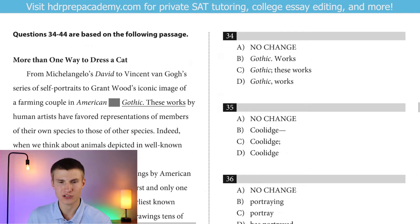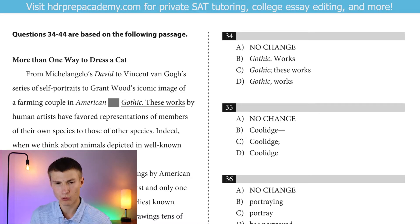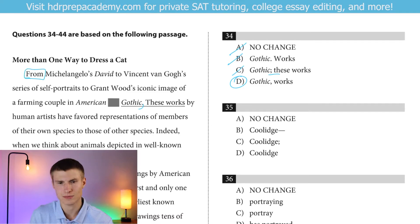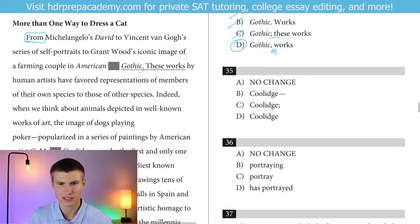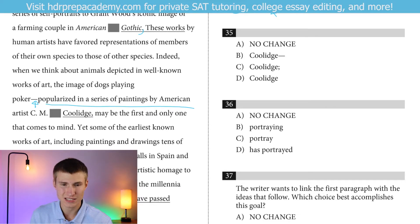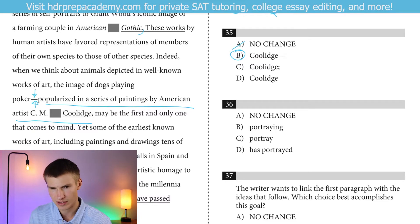Moving on to passage four: 'More than one way to dress a cat.' From Michelangelo's David to Vincent van Gogh's series of self-portraits to Grant Wood's iconic image of a farming couple in American Gothic — that's not an independent clause, so we can't have a period or semicolon there. We get rid of A and B (period), get rid of the semicolon — it's a dependent clause at the beginning of a sentence, so we put a comma there. Works by human artists have favored representations of members of their own species. When we think about animals depicted in well-known works of art, the images of dogs playing poker — this M-dash is indicating a non-essential phrase or clause — 'popularized in a series of paintings by American artist C.M. Coolidge' — closing it with another M-dash. Answer there will be B.